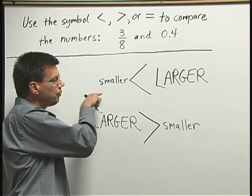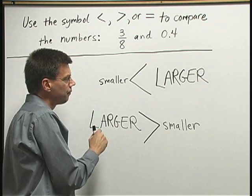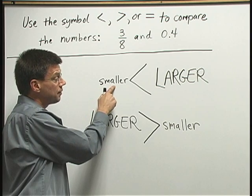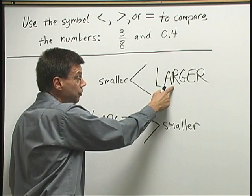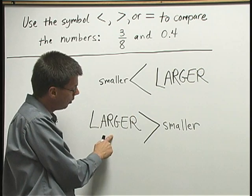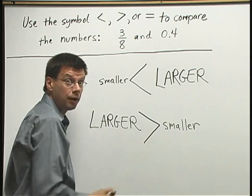Now, in English, we read from left to right, and when we read these symbols, we would read them as follows. The first one goes like this. The smaller is less than the larger number. When we read from left to right below, we would say the larger is greater than the smaller.